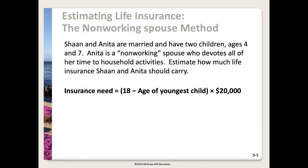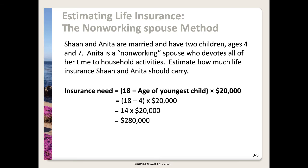Here's the non-working spouse method example. Sean and Anita are married with two children, ages four and seven. Anita is a non-working spouse who devotes all her time to household activities. The formula takes 18 minus the youngest child's age, times $20,000. So 18 minus 4 equals 14, and 14 times $20,000 gives an insurance need of $280,000.